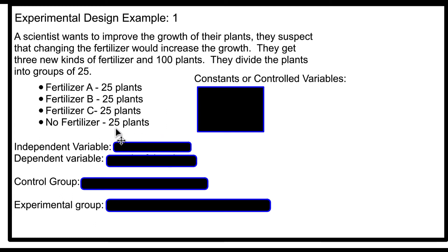Imagine there's a farmer growing crops and someone comes to him and says they have three different fertilizers that will work much better than what he's been using. This is a smart farmer, so he decides to do an experiment to make sure these fertilizers are in fact better than not using fertilizer. In order to make sure the experiment is fair, the farmer needs to control, or have some constants — things that aren't changing.